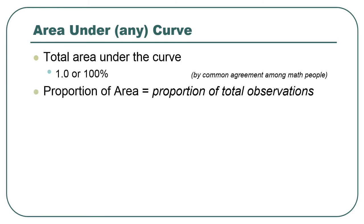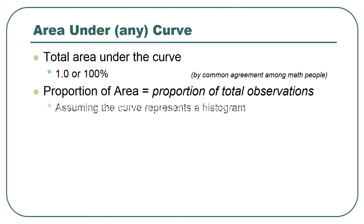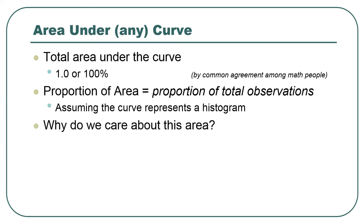If you divide that area up in any way, you have a portion of area. And if you're applying this distribution, overlaying it on top of a real distribution of values, you can say the proportion of area — say 25% of the area, or 0.25 — is the same as the proportion of the total number of observations represented by that distribution. 25% of the area is 25% of the observations. Areas are probabilities.